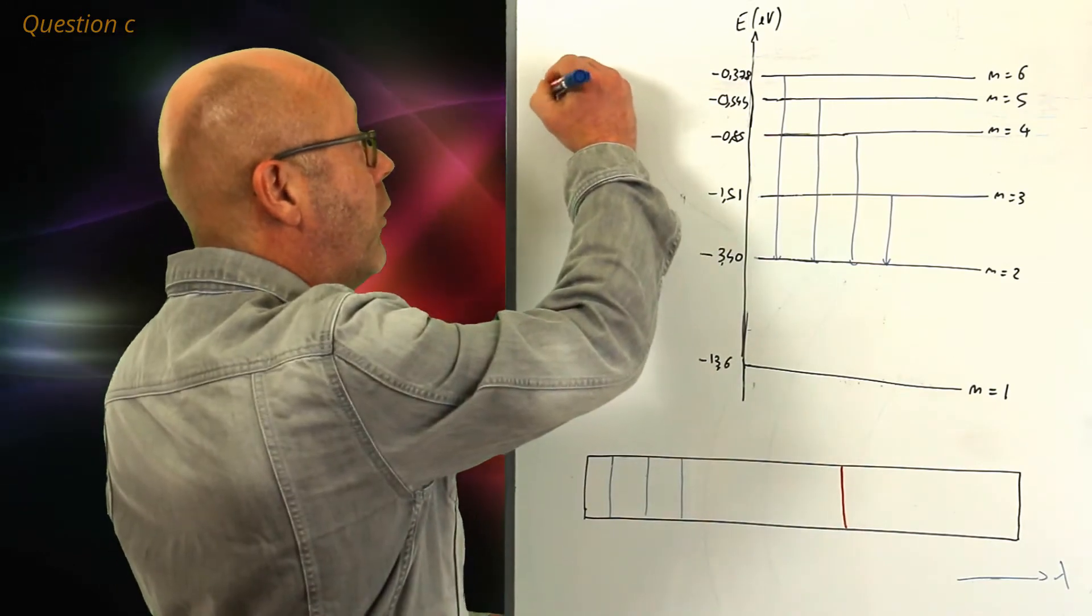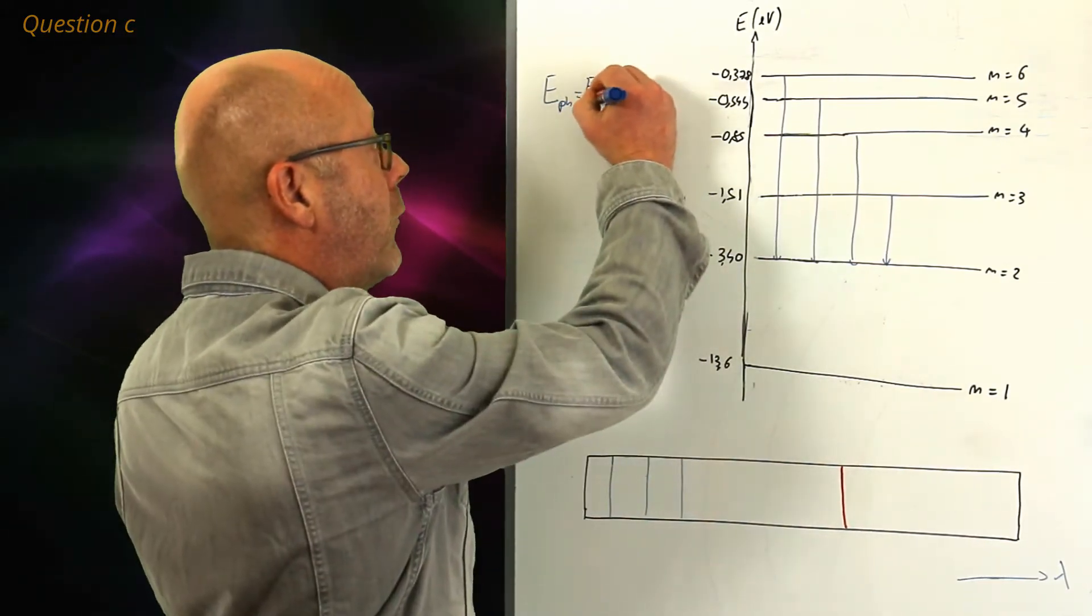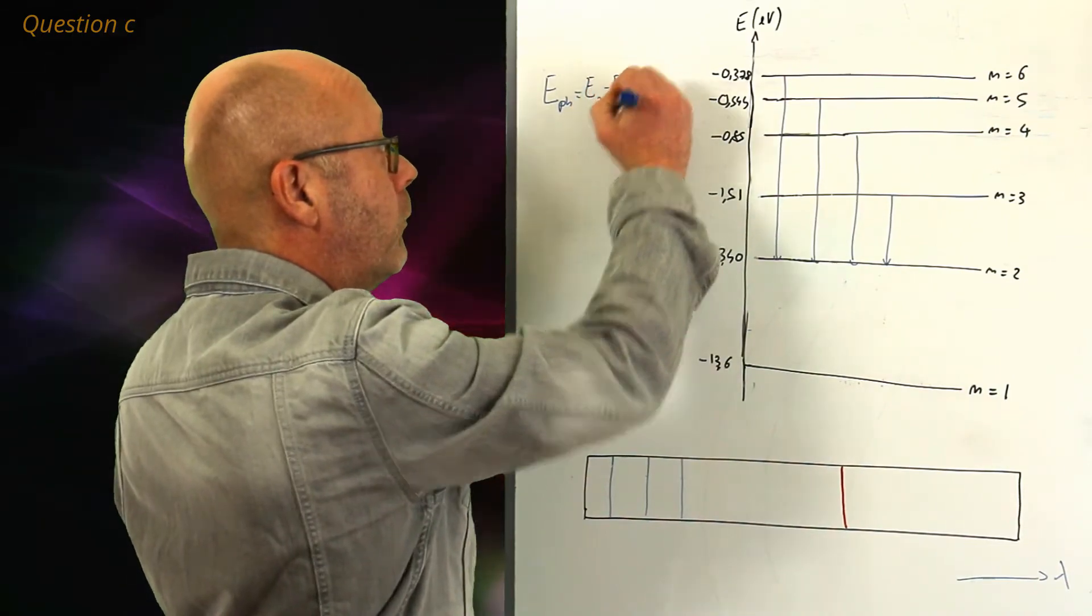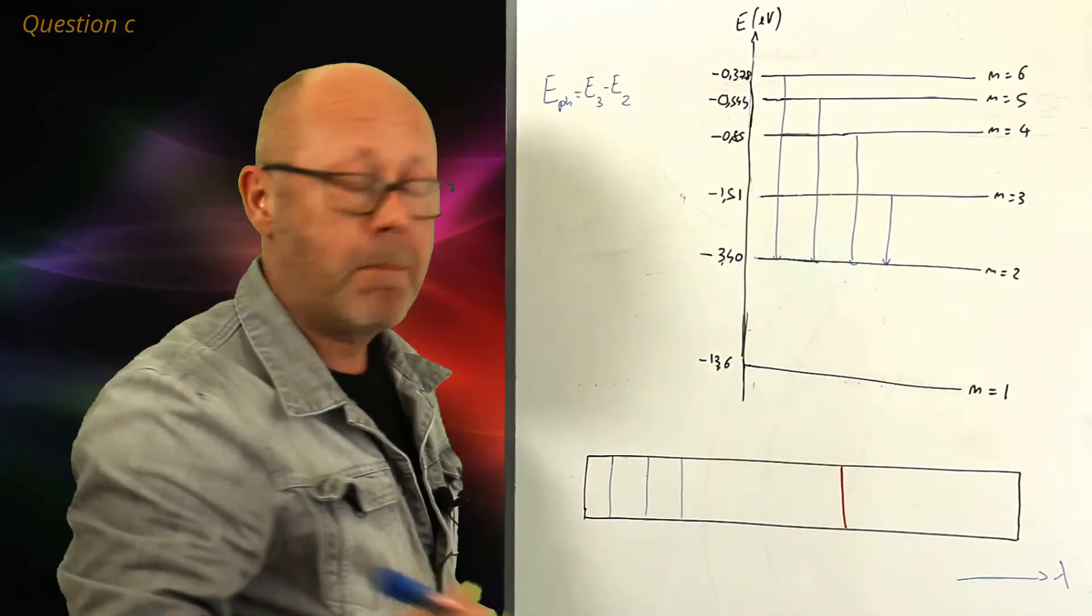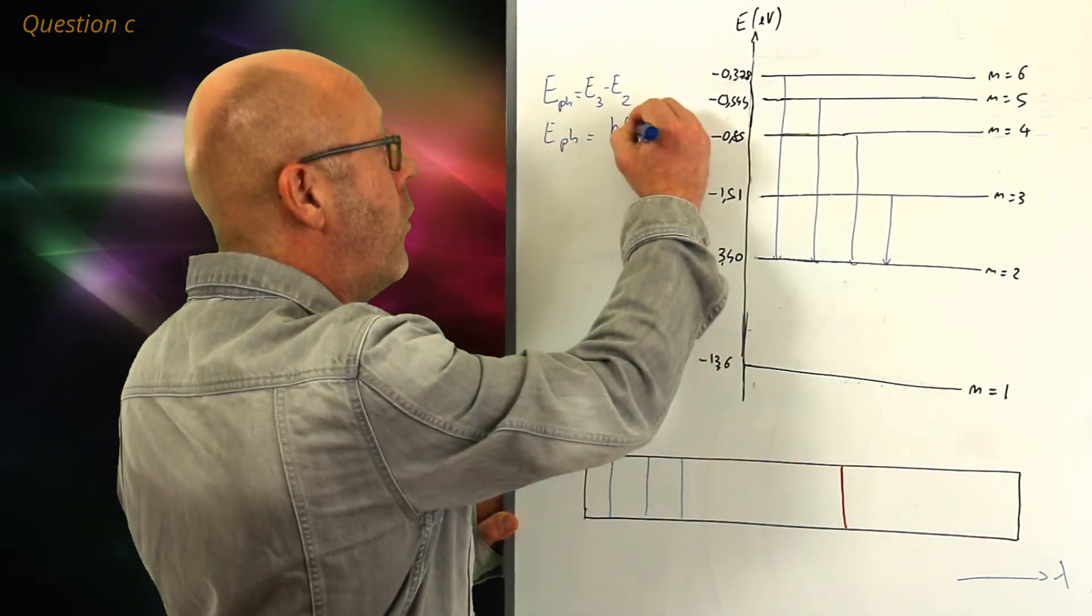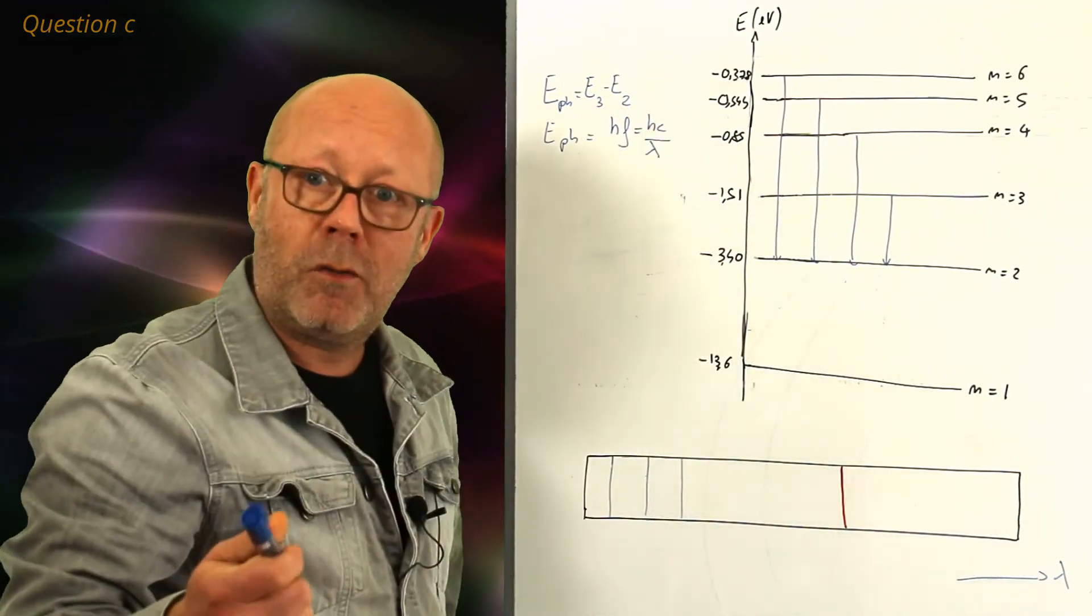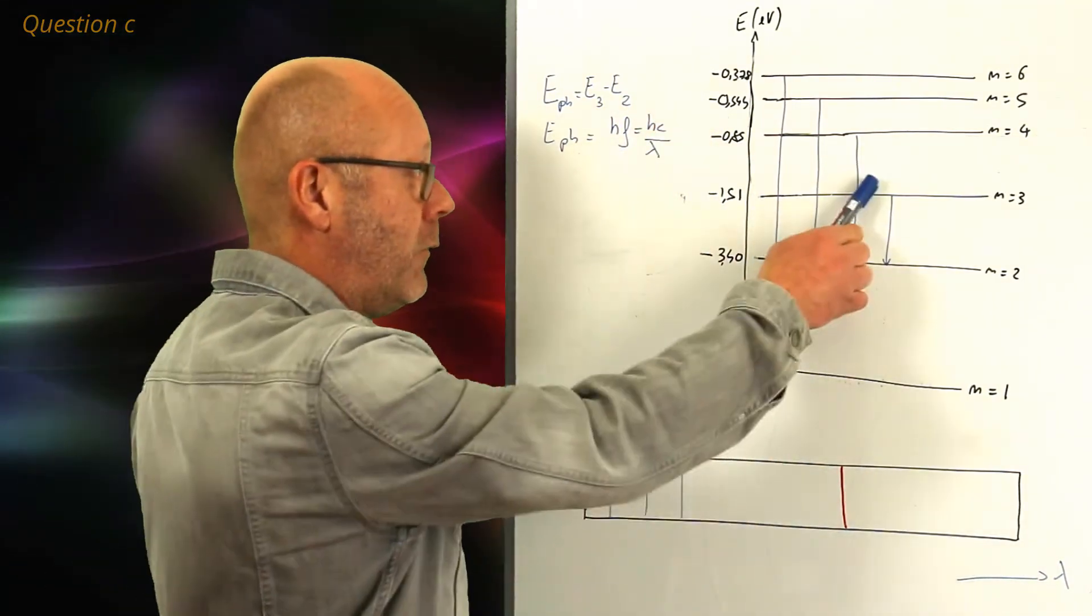The energy of the photon emitted will be equal to the energy of level 3 minus the energy of level 2. Right? So, it will also be equal to hf or hc on lambda. This wavelength will correspond to the transition from level 3 to 2.